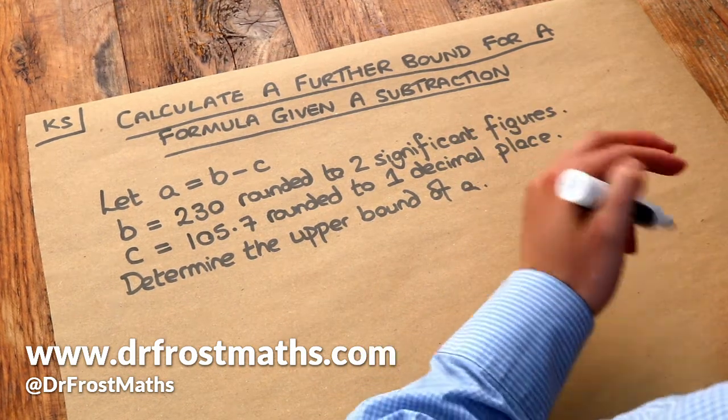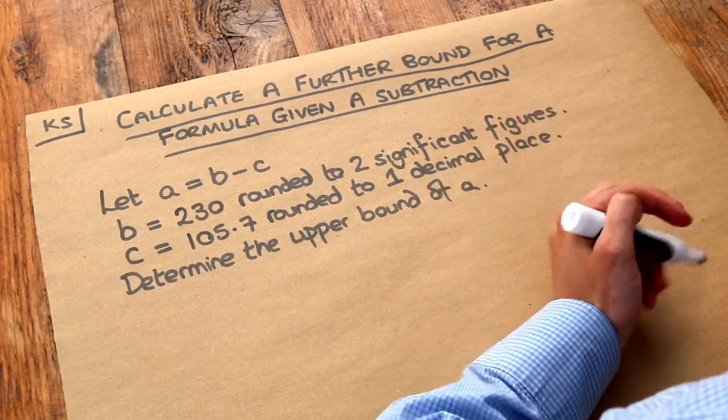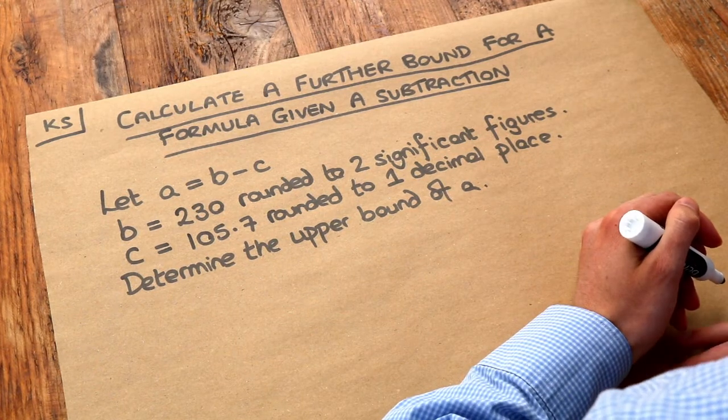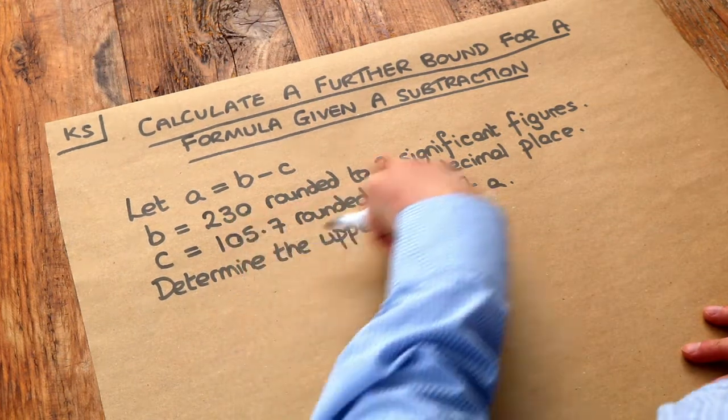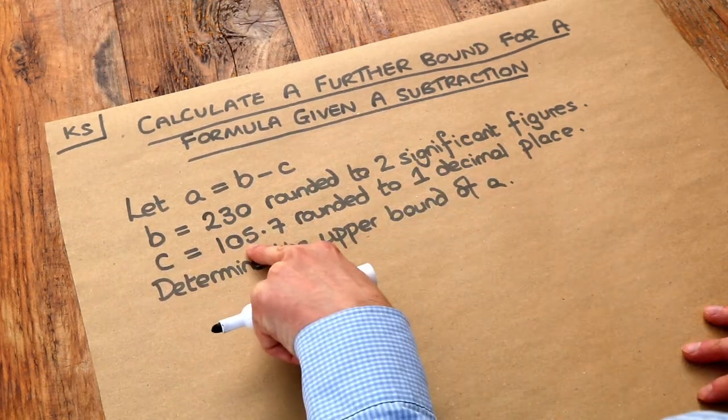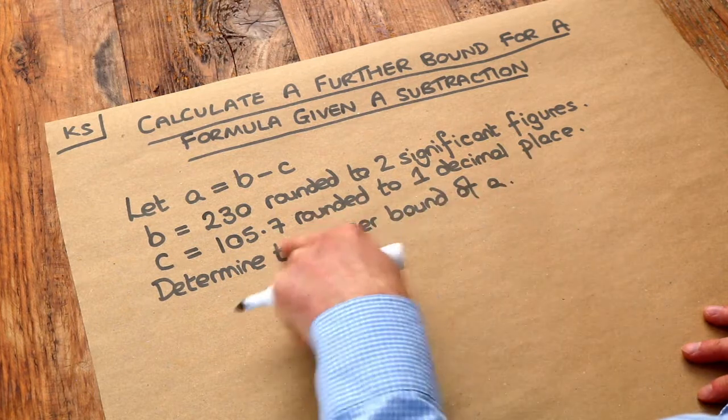Now I'm assuming in this video you're already familiar with finding the lower bound and upper bound of a measured quantity. So let's read this question. We've got A which is B minus C and we're told what B is and what it's rounded to, and we're told what C is and what it's been rounded to to get that number.